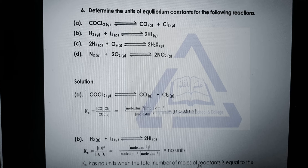In question six, determine the units of the equilibrium constant. Number one is COCl₂ giving carbon monoxide and chlorine. There are two moles of products and one mole of reactant. Write product concentrations in the numerator and convert to moles per cubic decimetre; after cancelling, you get one mole per cubic decimetre as the unit. Use the same method for the other reactions in this question. Questions seven and eight have answers already in your chapter — read them from there.